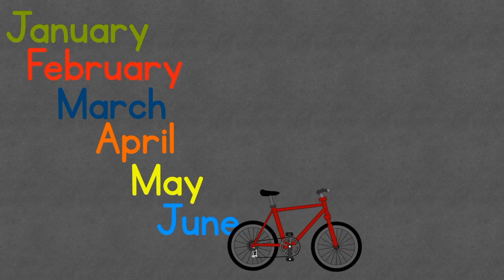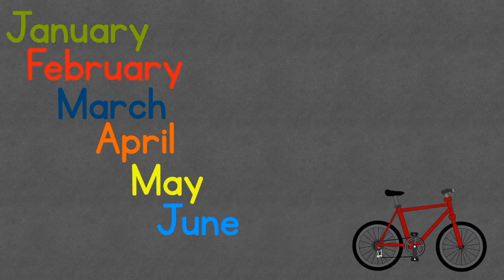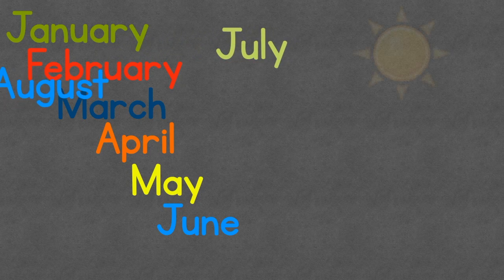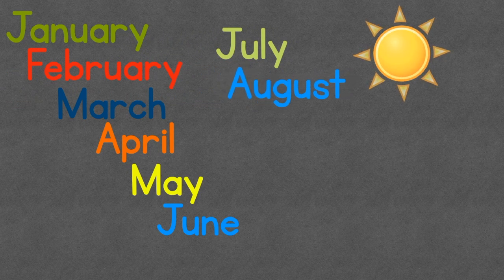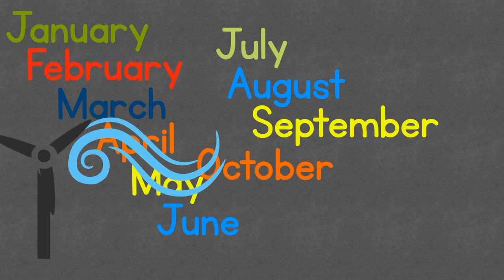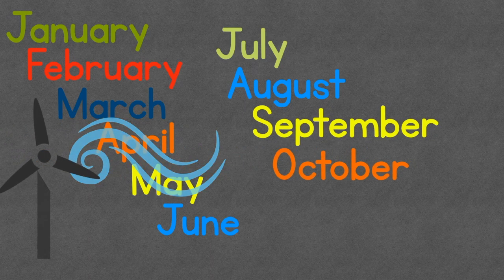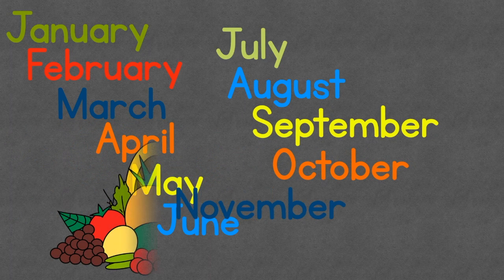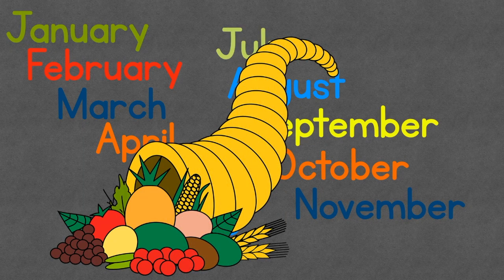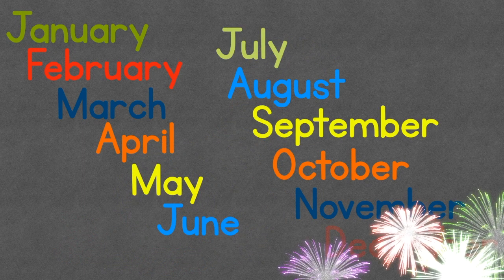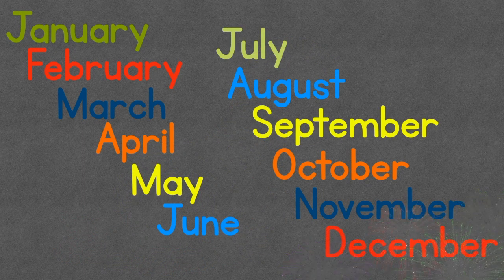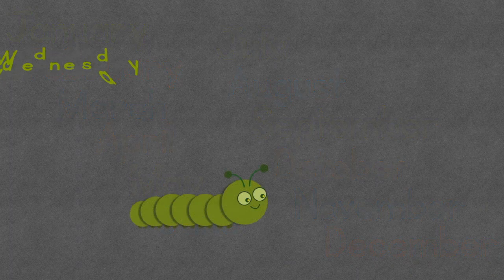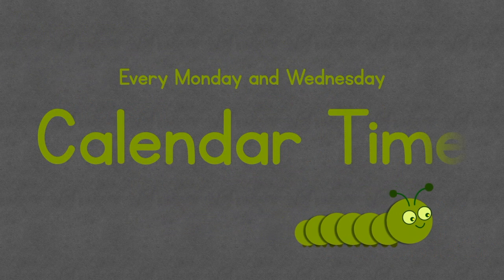Now it is May and June and we're having fun. July and August, we're soaking up the sun. Autumn breeze in September and October too. November, remember thankfulness and December. The year is through! It's calendar time!